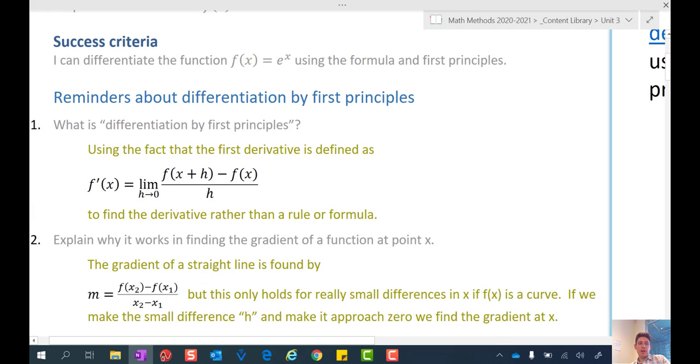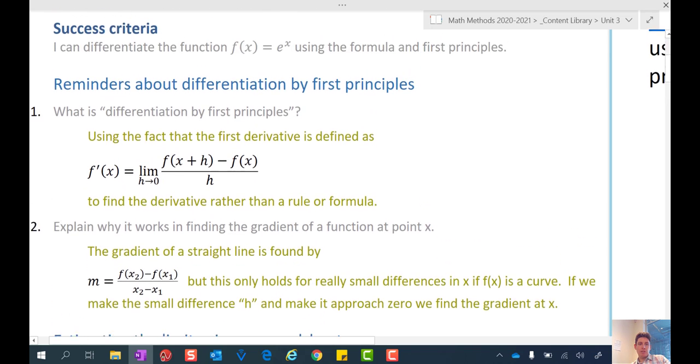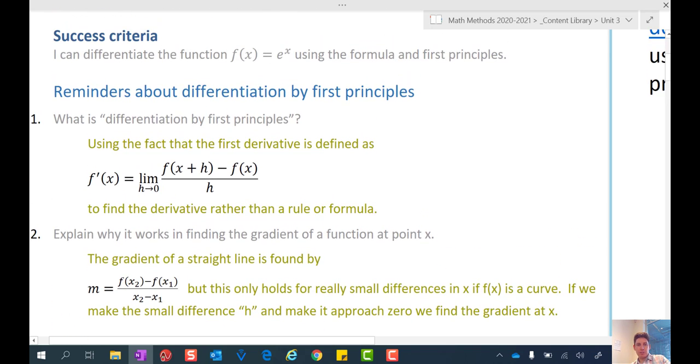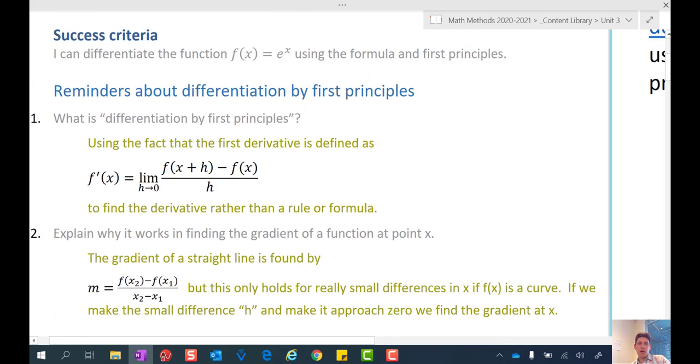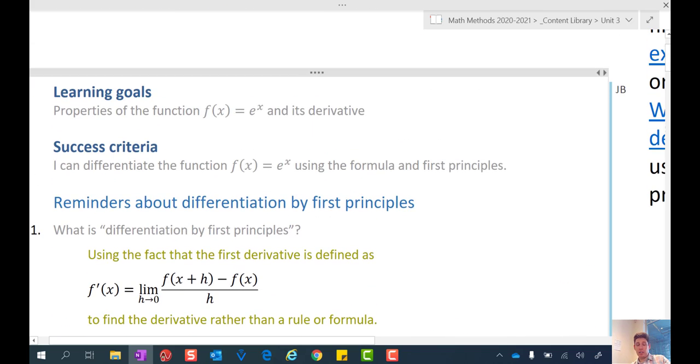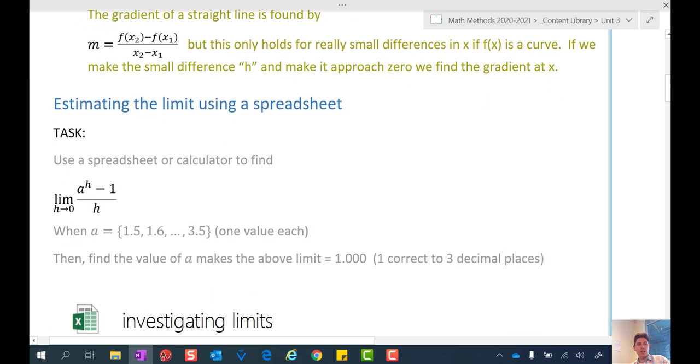You may remember that the rate of change is equal to the gradient at a point, and we can find this rate of change using first principles or general rules. Unfortunately, we don't have a general rule for e to the x, so let's investigate this further.